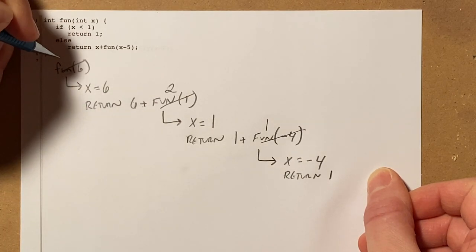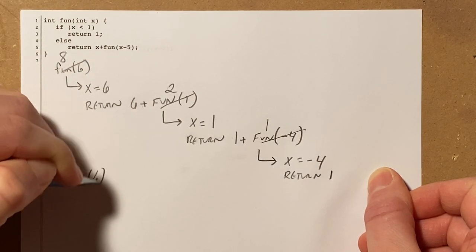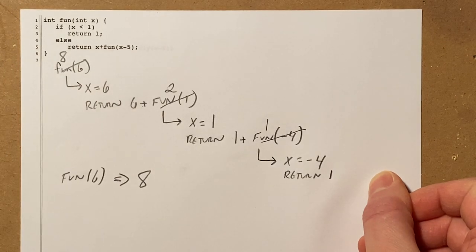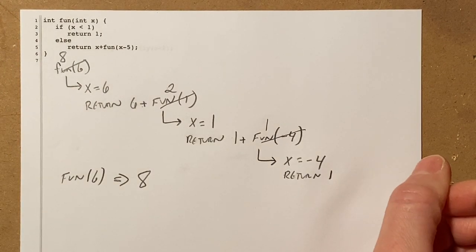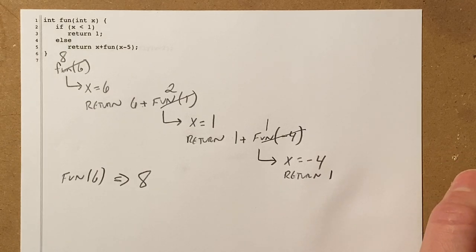So I'm going to cross this out and replace it with 8. So that means fun of 6 returns a value of 8. And that is our first of 2 problem solving techniques for recursive methods.